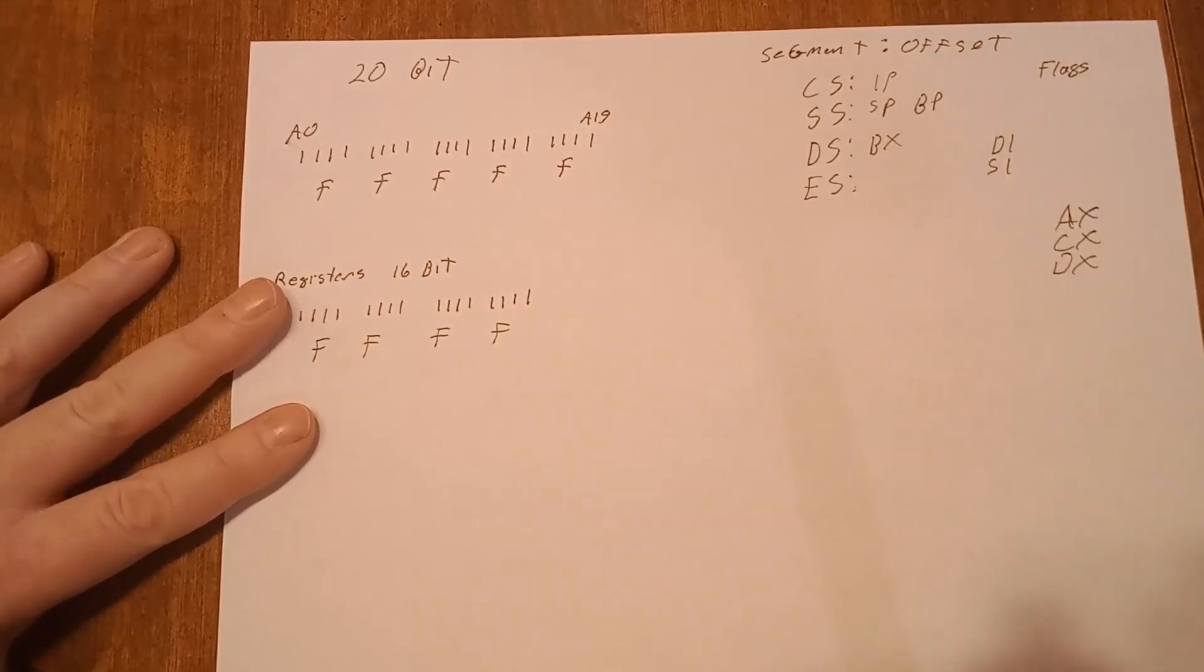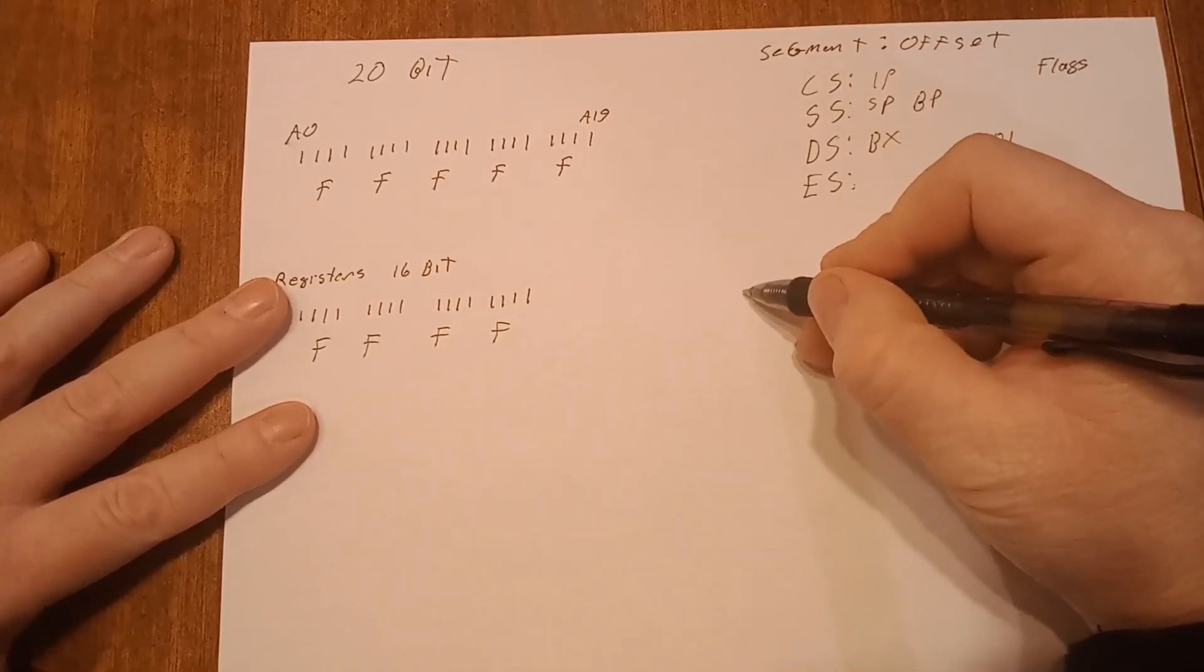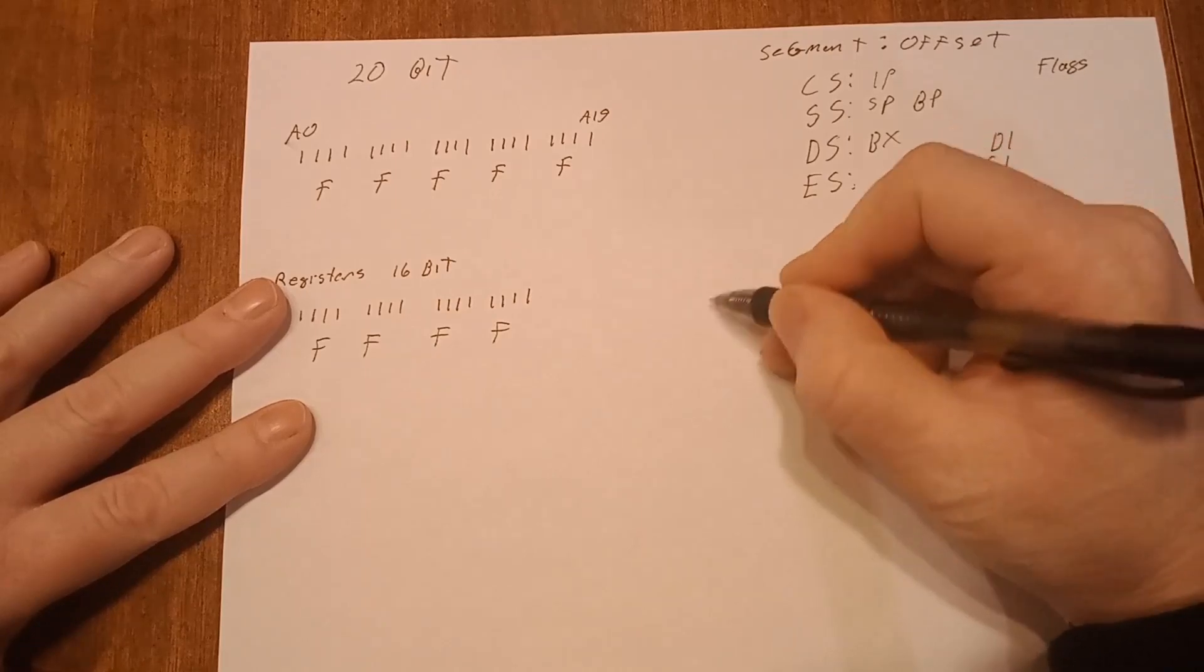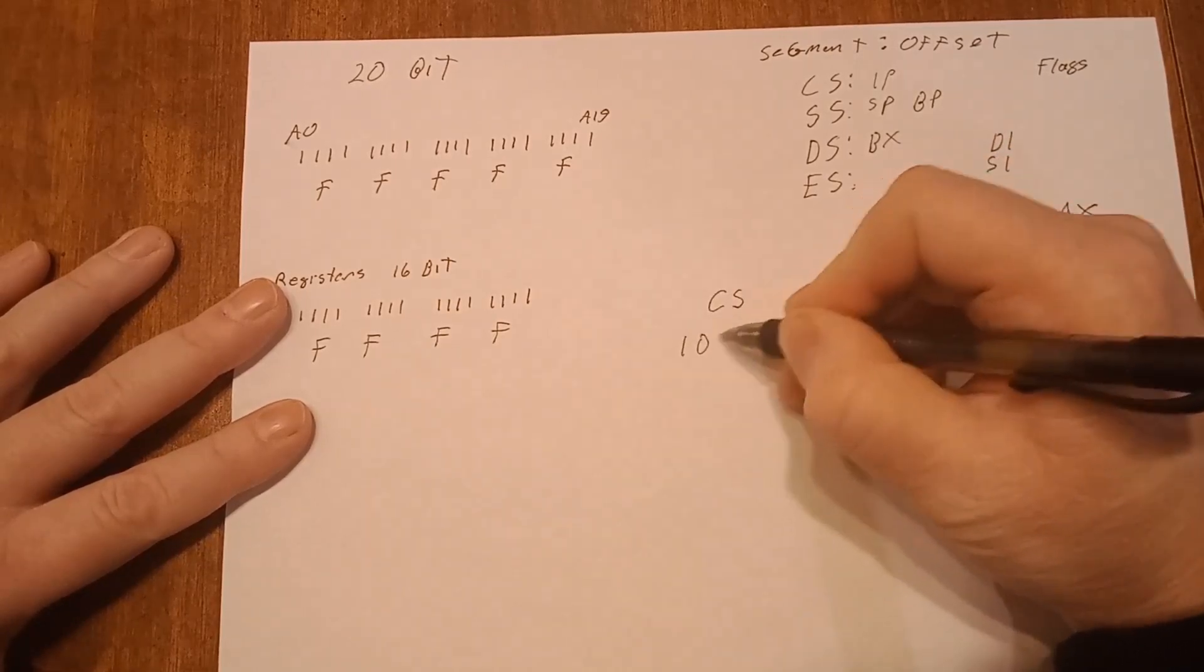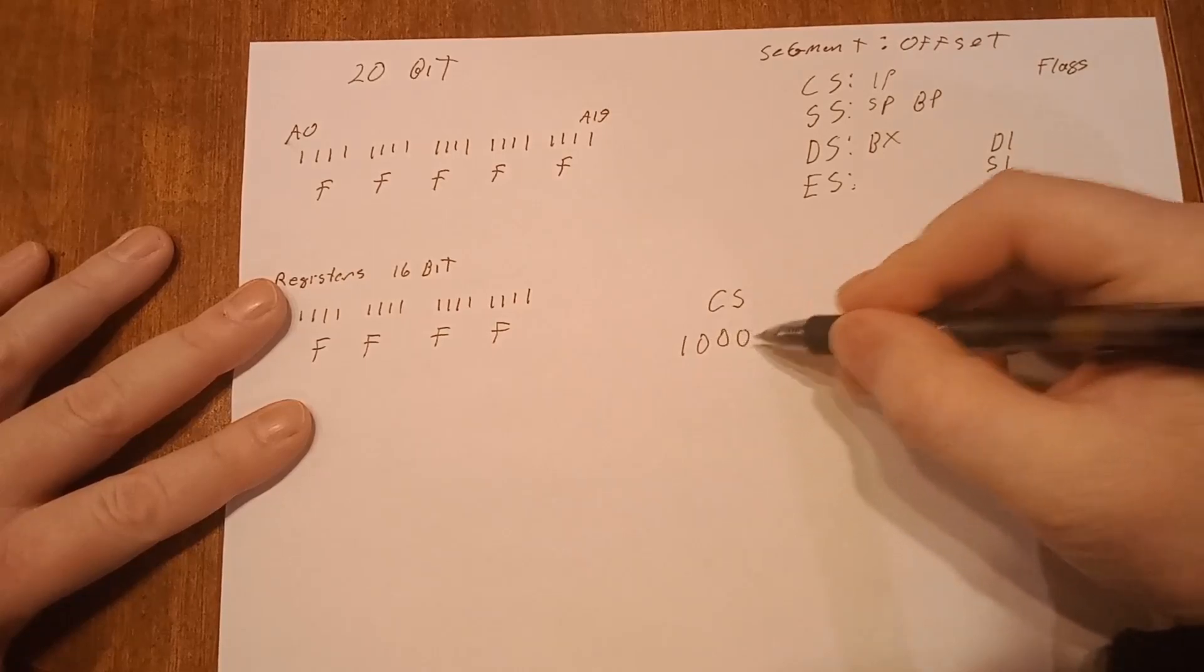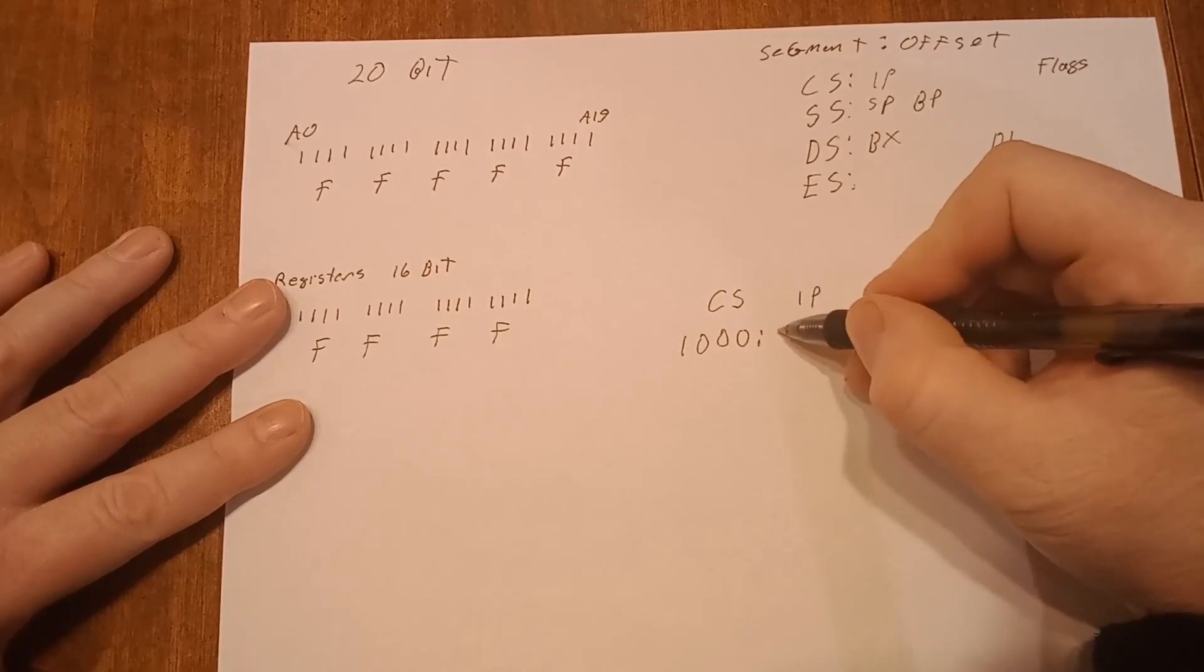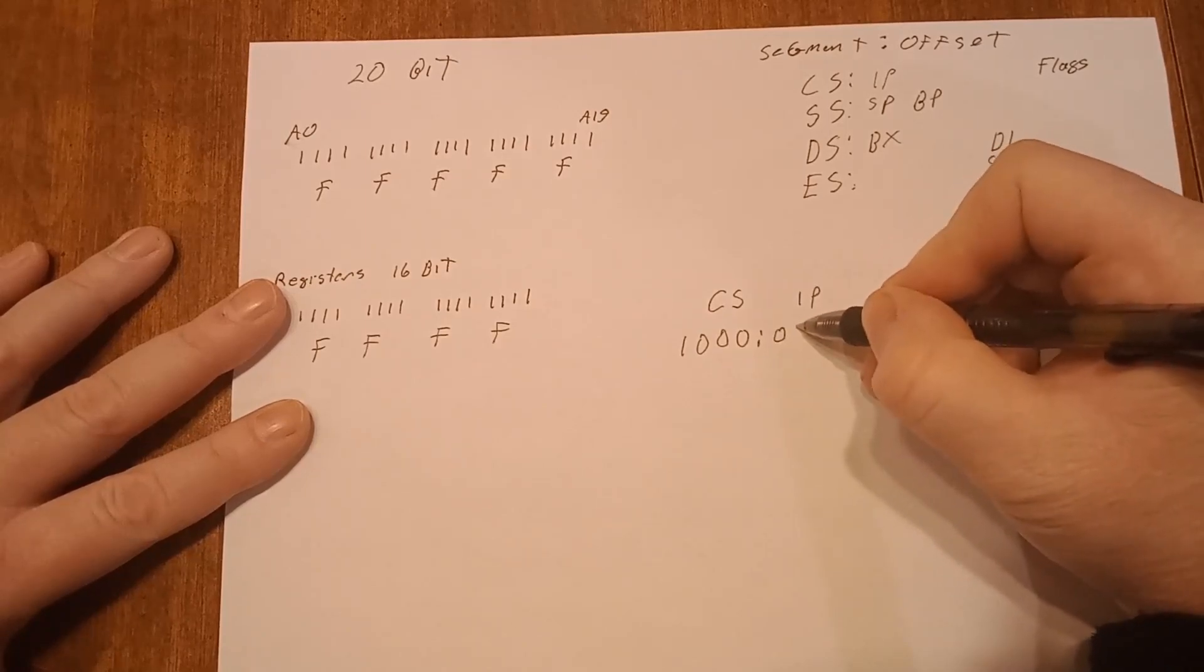So what happens is, let's say you have in hexadecimal, of course, an address in your code. Let's just go code segment. Let's just say it equals, we'll make it real easy. One zero zero zero. We'll put our colon in there and our instruction pointer. We'll make it like we're addressing a com file. So one zero one.